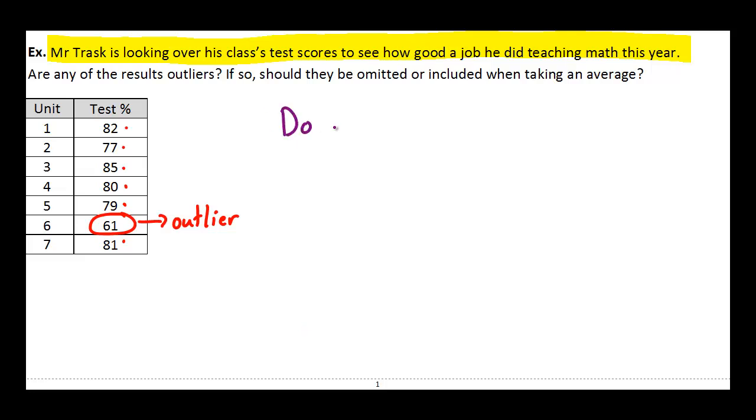So, in this case, we would not omit the outlier. And the reason is because it's an important piece of information.